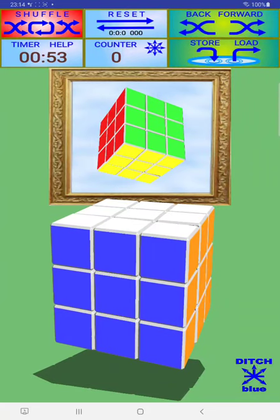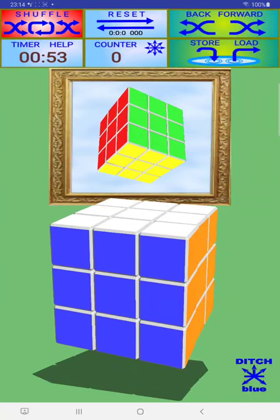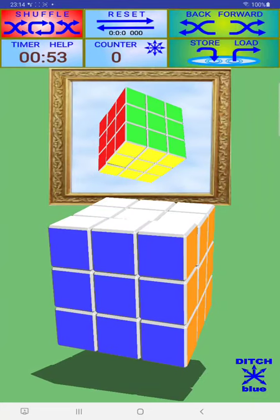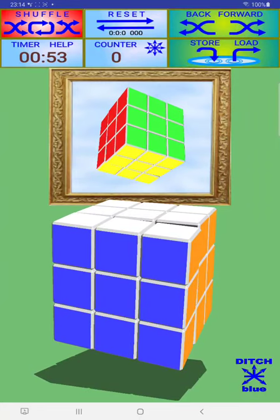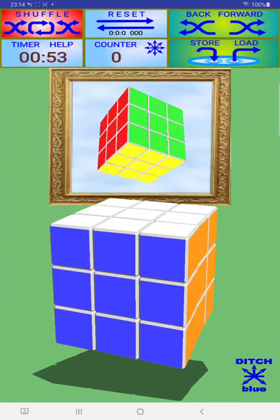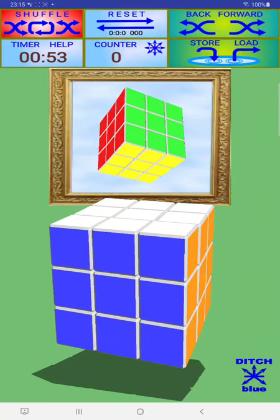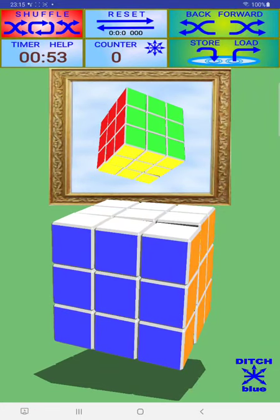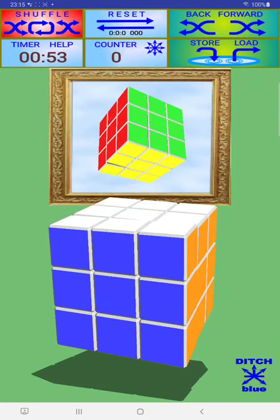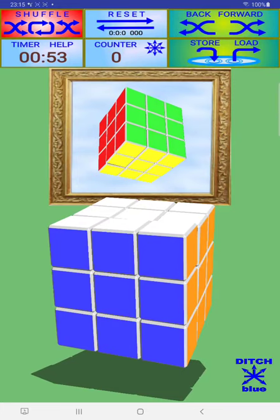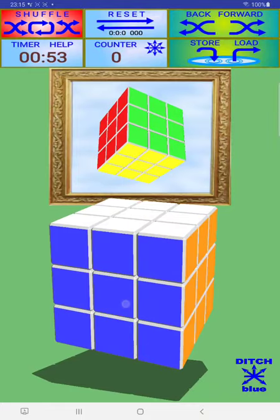And this second feature are buffers. Buffers in which you can store either sequences of movements so that you can repeat them. We will see this as soon as possible.